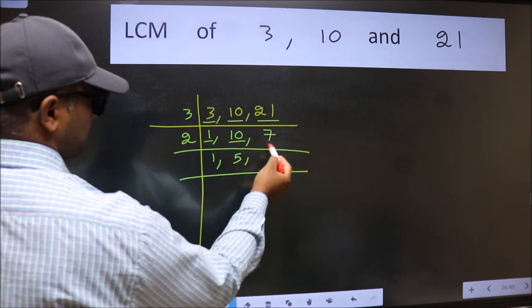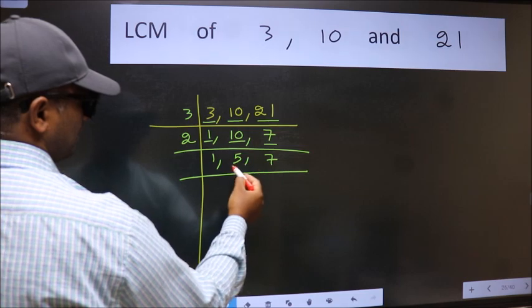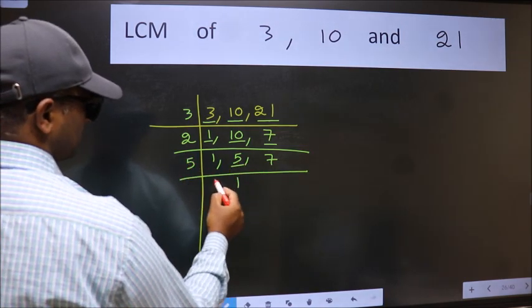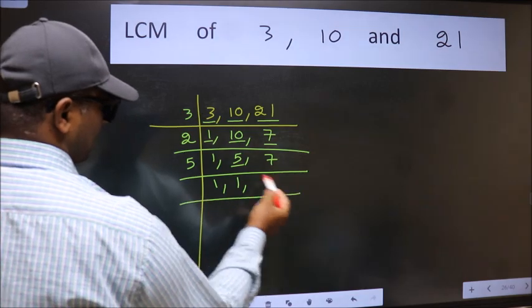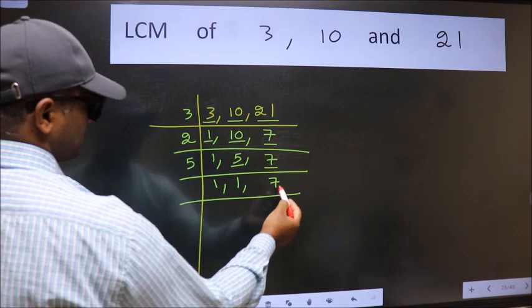The other number 7 is not divisible by 2, so we write it down as it is. Now here we have 5. 5 is a prime number, so 5 once is 5.